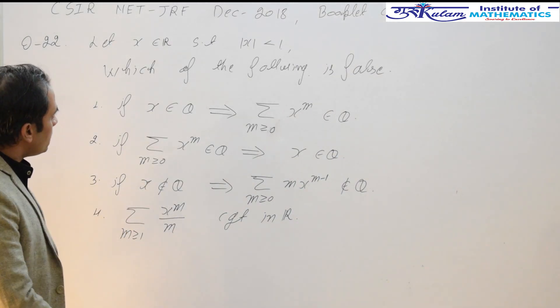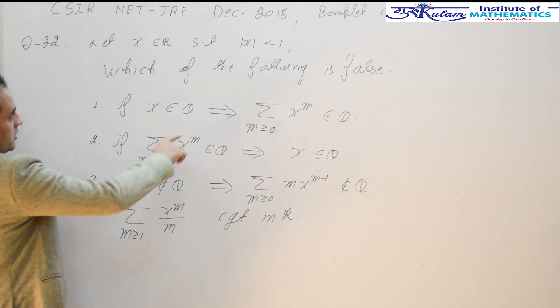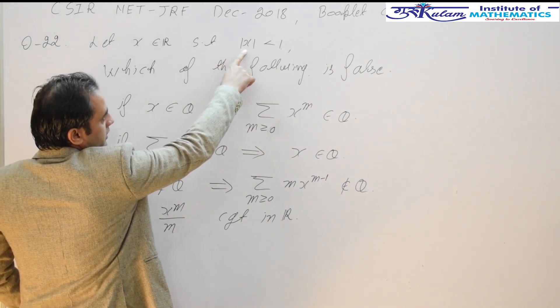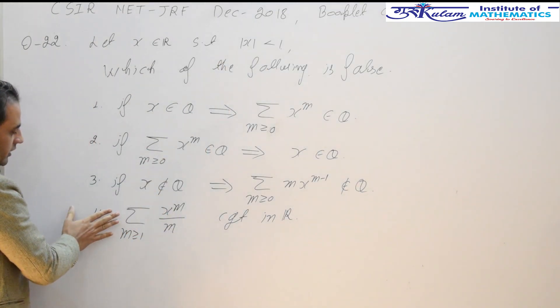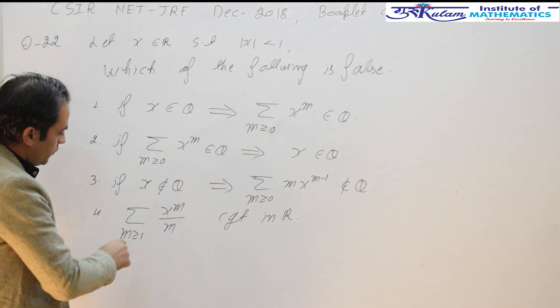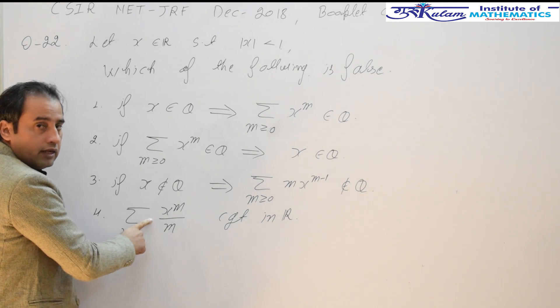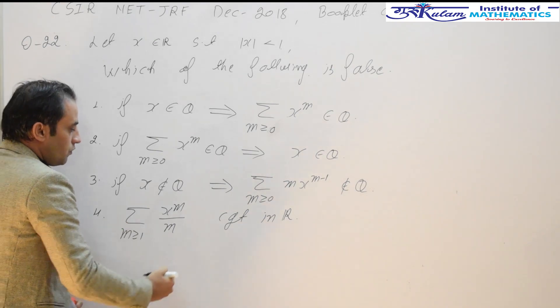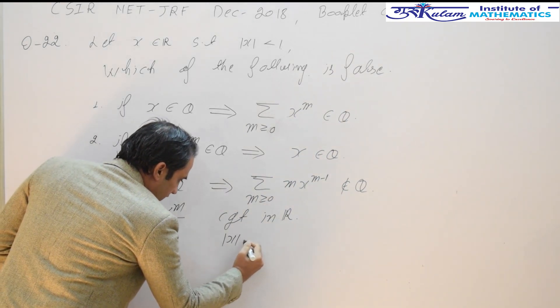Let us start with option number D. Since mod of x is less than 1, you can find the radius of convergence of this series. The ROC of this series is 1. Hence, this series is convergent for all mod of x less than 1.